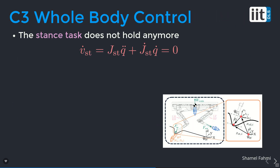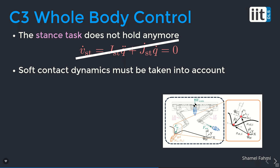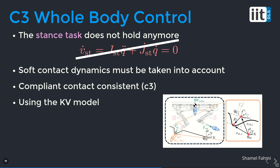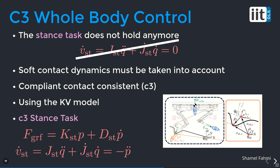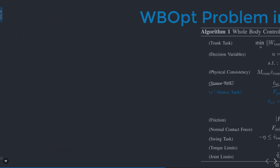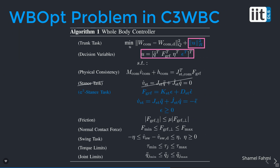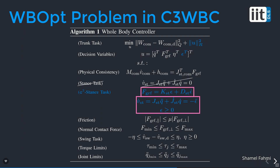The whole body controller presented is the standard formulation, which is not consistent for soft terrain. This is mainly because on soft terrain, the stance task doesn't hold anymore — instead, we must take soft contacts into account. To be compliant contact consistent, we use a generic soft contact model consisting of linear springs and dampers parallel and perpendicular to the contact point. So instead of the standard stance task, we reformulate with a compliant contact consistent stance task. We extend the QP decision variables with the ground penetration and regularize this variable in the cost function, then replace the inconsistent stance task with the compliant contact consistent stance task.